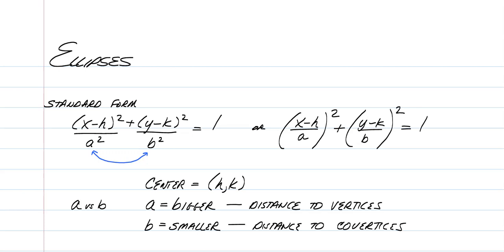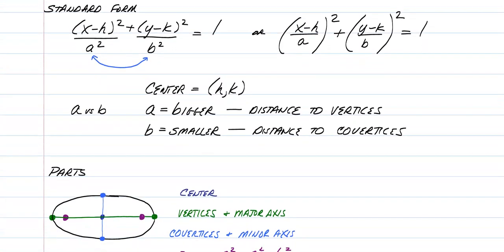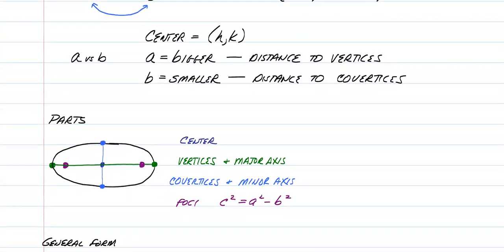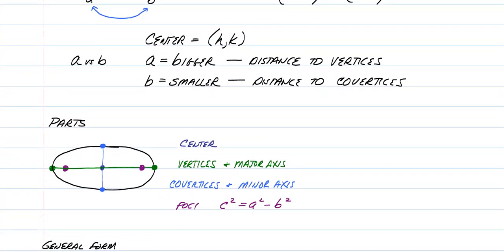Similar to a circle, we have our x minus h and our y minus k, where our center is still h and k. Our denominators A and B are going to be your distance to the vertices and the distance to the co-vertices of an ellipse. It's kind of like the radius in an x direction and a radius in a y direction. So, let's look at the parts of an ellipse.